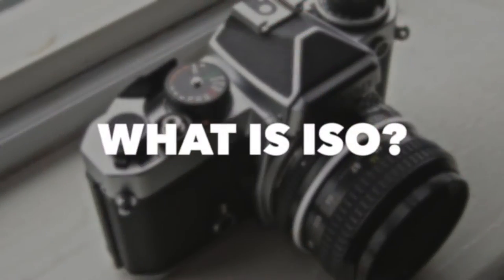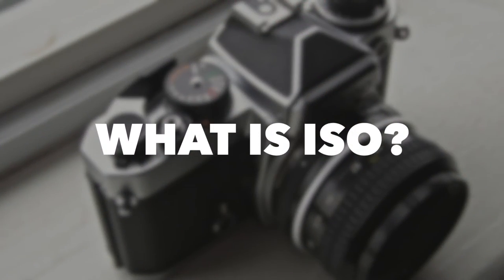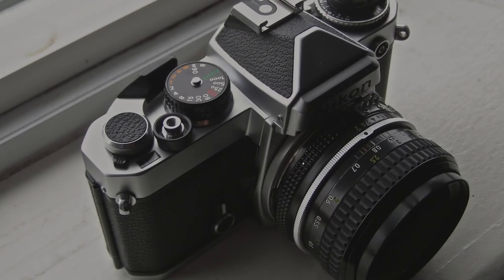So that is the basics of what ISO is in photography. This is just one part of the exposure triangle — we have two more parts to go, but I'll talk about that in a separate video. This is Jordan from SleekLens.com and I'll see you in the next one.